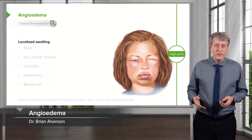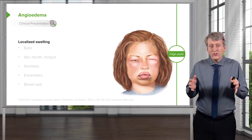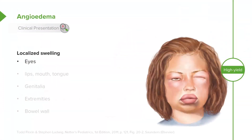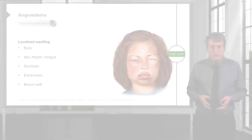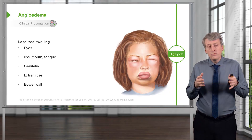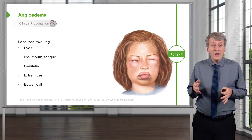Angioedema is sort of like hives gone wild. This is a localized swelling that happens in an area, often on the face. It can happen around the eyes, on the lips, the mouth, or the tongue. It may happen on the genitalia, the extremities, or even in the bowel wall, causing bowel discomfort, nausea, vomiting, or more systemic symptoms. Where we worry most is when this involves the lips, the mouth, and the tongue, because we worry about the patency of the airway — sometimes the swelling can get so bad the patient may have trouble breathing.